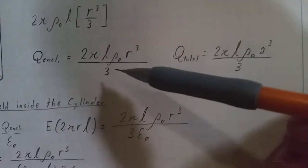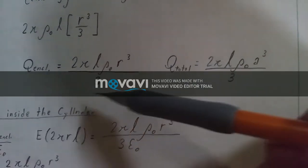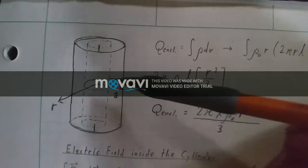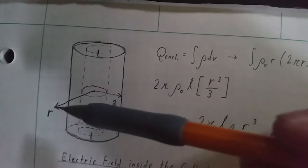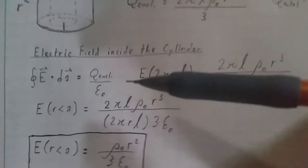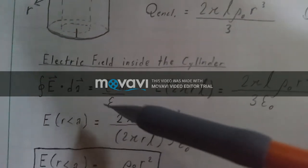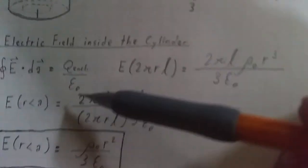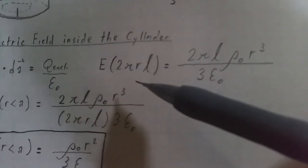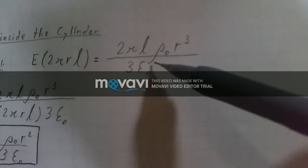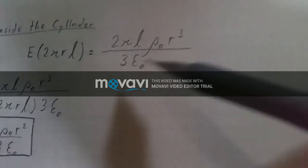With that, we get two equations. One equation has 2 pi l rho naught times r cubed over 3, representing q enclosed. For q total, we replace little r with a, which represents the entire cylinder radius. Moving on to inside the cylinder, the enclosed integral of the electric field times the derivative of area equals q enclosed over epsilon naught. Including the area of the cylinder, we have E times 2 pi r l equals 2 pi l rho naught times r cubed over 3 epsilon naught.